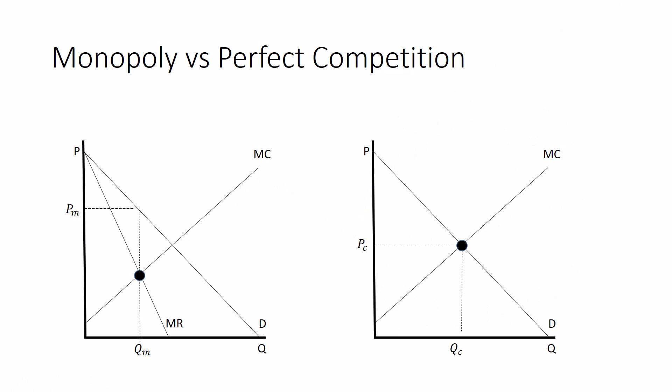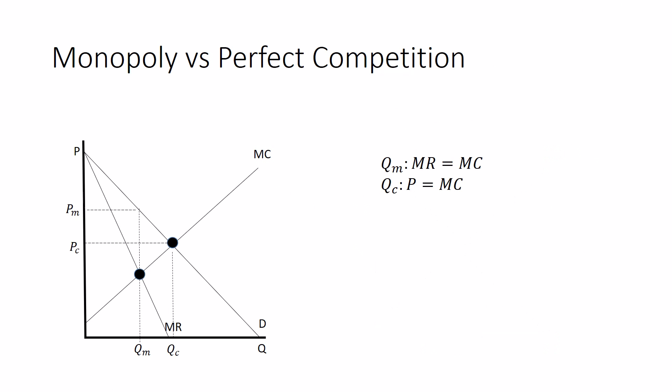And then we see this equilibrium, where the price is set equal to the marginal cost at the equilibrium quantity. Well, where does that line up on the monopolist graph? It's here.